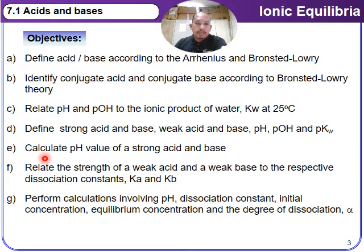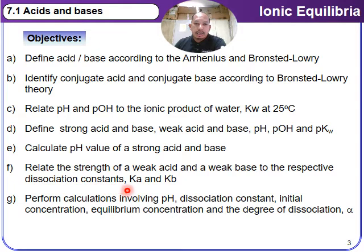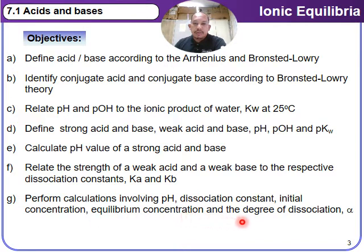Objective (e) is to calculate the pH value of a strong acid and base. Objective (f) is to relate the strength of a weak acid and a weak base to their respective dissociation constants, Ka and Kb. Objective (g) is to perform calculations involving pH, dissociation constants, initial concentration, equilibrium concentration, and the degree of dissociation, alpha.